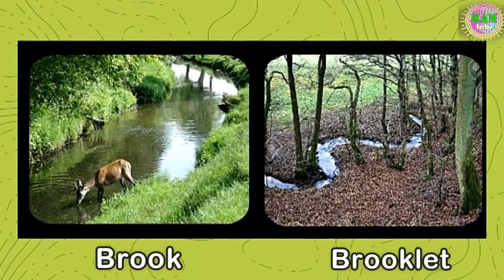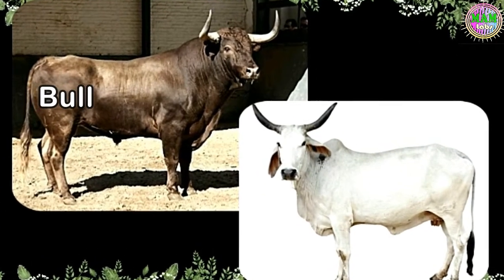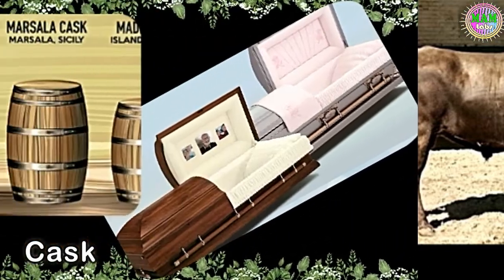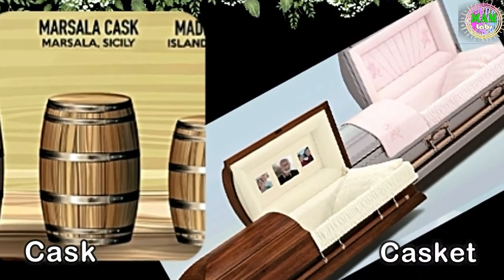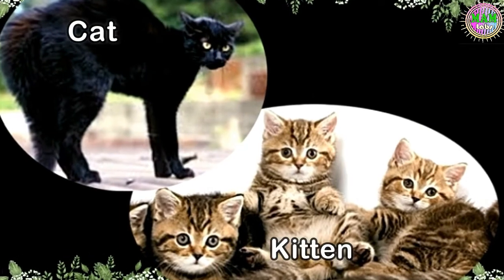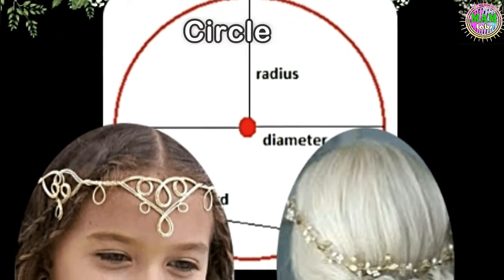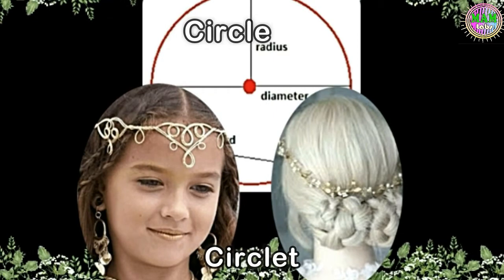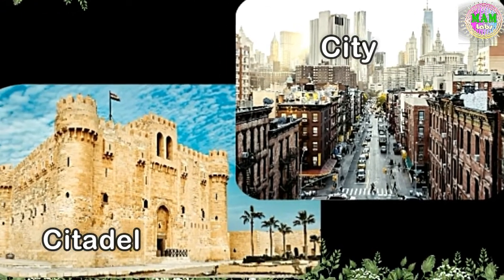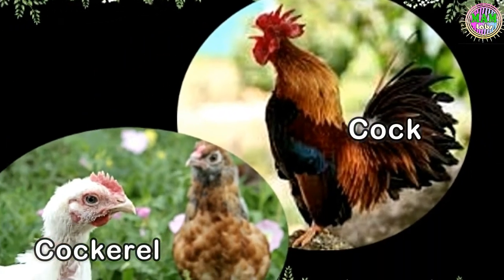Brook → Brooklet. Bull → Bullock. Cask → Casket. Cat → Kitten. Circle → Circlet. City → Citadel. Cock → Cockerel.